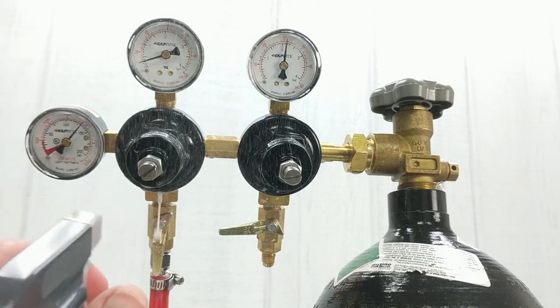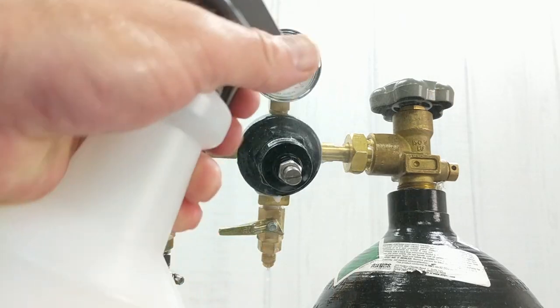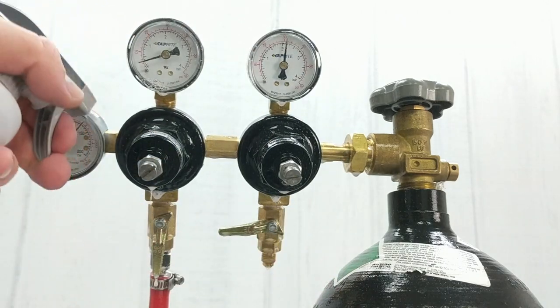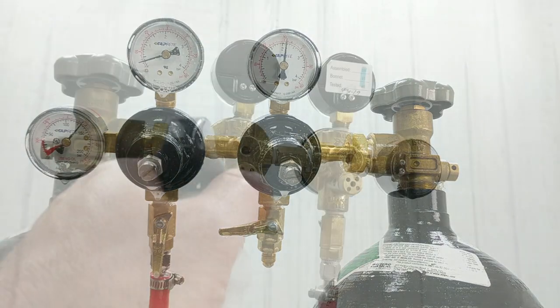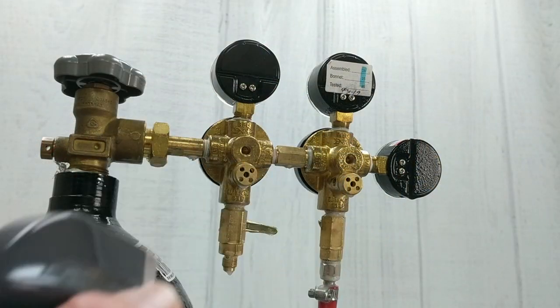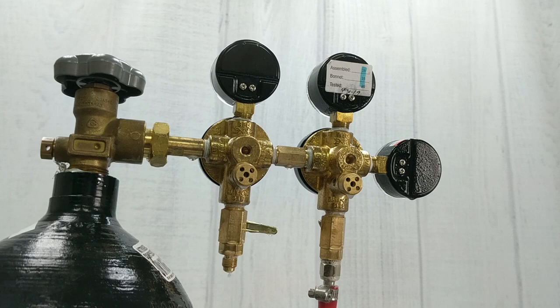Next we test our regulator to make sure there's no leaks in the body of it. Just douse the entire regulator front and backside as well as where the regulator attaches to the gas tank bottle. If you don't see any bubbles forming here, you're good to go.